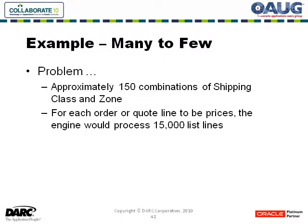The problem with this was purely the numbers. There were about 150 combinations of shipping class and zone. Combined with up to 150 lines on every modifier, you're looking at 15,000 — in some cases up to 20,000-plus lines — looked at for every single pricing call. The biggest reason was that each line had all items, so every item priced, regardless of whether the freight charge would apply or not, would look at those lines — upwards of 15,000 to 20,000 lines chosen.